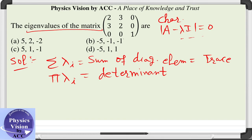Now let us calculate the sum first, which is 2 plus 2 plus 1, that is 5. So the sum of the eigenvalues should be 5 in the given options. We can check: this option gives a sum of 5, this also gives 5 as the sum, this gives minus 7, and this gives minus 5.